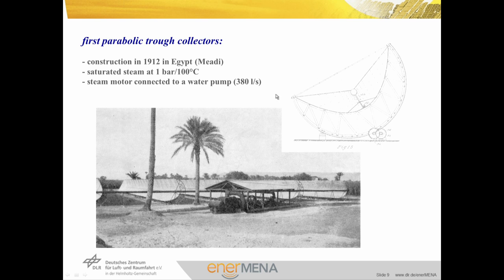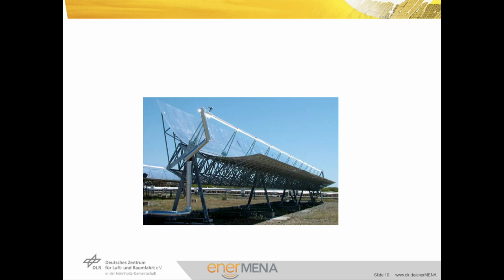Because the sun is moving during the day we need a special gear system in order to track the collector. 100 years ago the parabolic trough collectors were still simple because only 100 degrees and 1 bar were needed for operation. Today we would like to do electricity production with high efficiency and need about 100 bar and 500 degrees for operation, so we need a totally different collector — as you can see in this picture of a real modern parabolic trough collector.